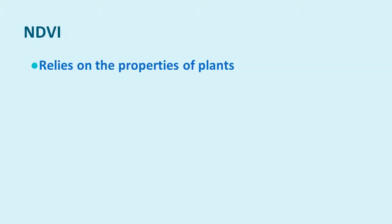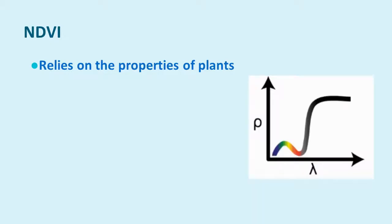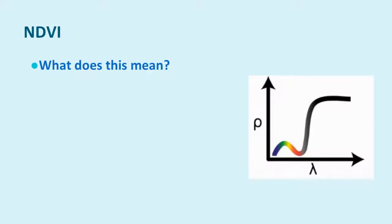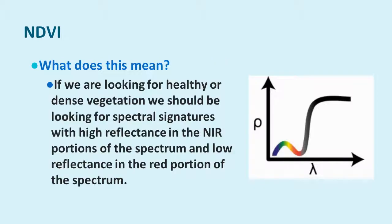NDVI allows us to take the properties of plants on the ground and begin to interpret what's going on in that scene. NDVI relies on the properties of plants — plants have a spectral signature. They reflect a lot of near-infrared light and they absorb a lot of red light. As a result, if we're looking for healthy or dense vegetation, we want to look for spectral signatures with high reflectance in the near-infrared portion of the spectrum and low reflectance in the red portion. Using that key idea, NDVI becomes very simple to work with.